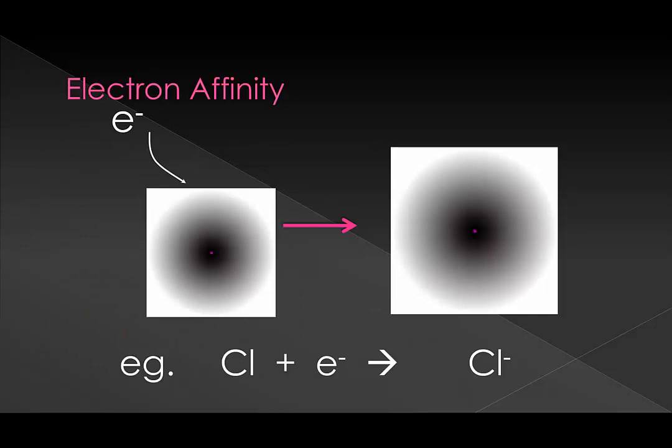Let's start with electron affinity. This is the tendency of an atom to gain an electron, thereby becoming an anion, or a negative ion. Important things to note are that this applies to an individual atom, not an atom in a bond, and it is becoming a negative ion. This is going to be quite different from what we see when we get to electronegativity.